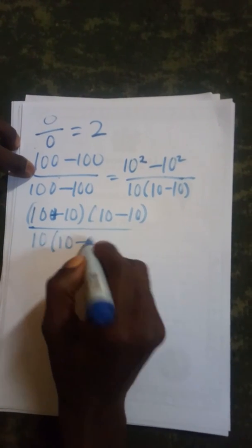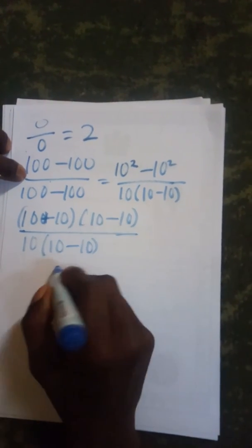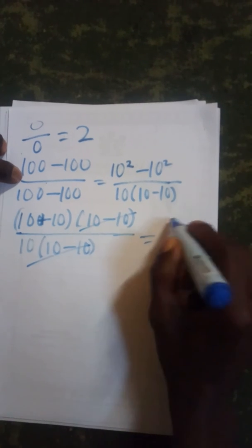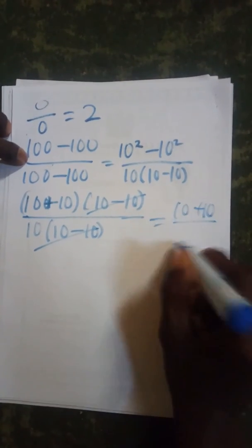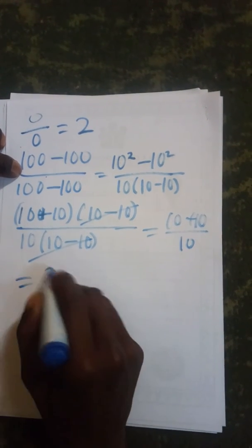into 10 minus 10. So since this one and this one are the same thing, this one can go with this. So we are left with 10 plus 10 all over 10, which equals 20